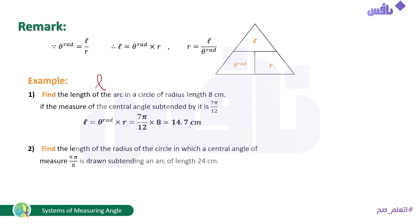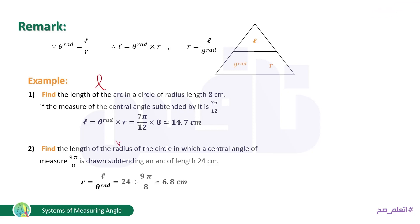Example 2: find the radius of the circle in which a central angle of measure 9π/8 subtends an arc of length 24 cm. Required: r. Using r = L / θ rad: r = 24 ÷ (9π/8). By calculator, the result is approximately 6.8 centimeters.